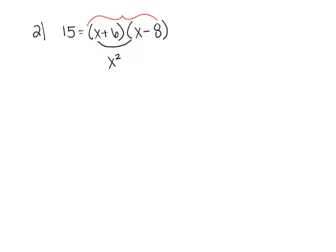x times x gives me x squared. x times negative 8 gives me negative 8x. 6 times x is plus 6x. 6 times negative 8 gives me negative 48. I'm going to move that 15 to the other side. It doesn't matter which way I move the 15, as long as I keep everything on the same side. Combining like terms gives me x squared plus 2x. Negative 48 minus 15 gives me negative 63, and those cancel to give me 0.